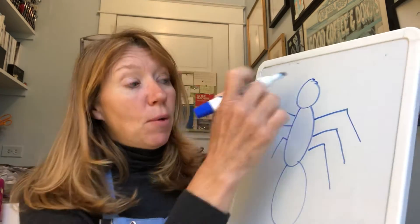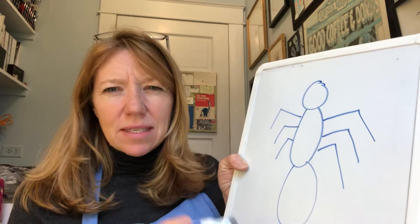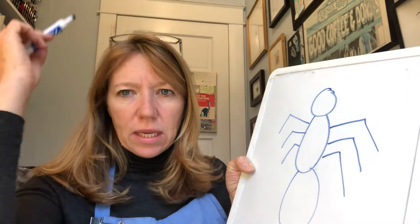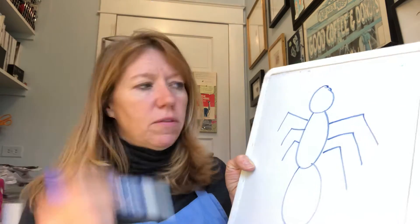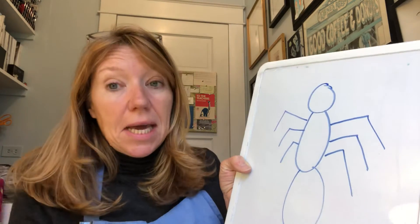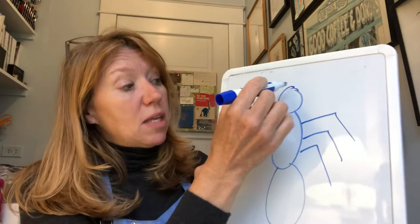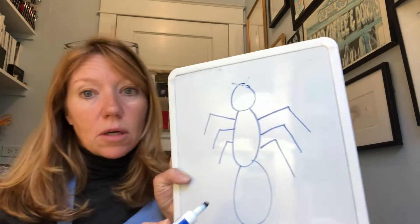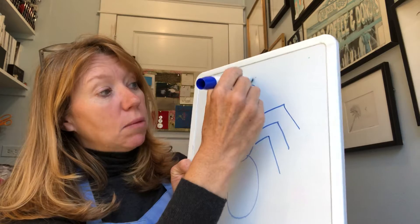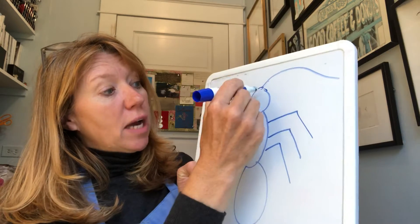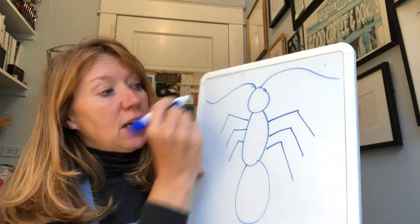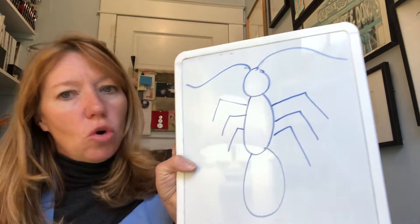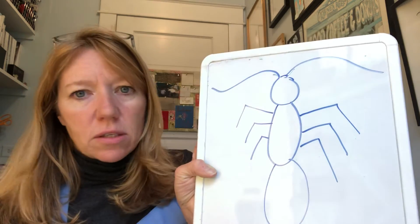Now I'm also going to draw some antennas. Those are like the parts that come off the bug. You can make them short, or you can make them long and curving. Totally your choice.